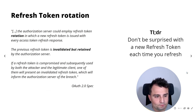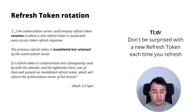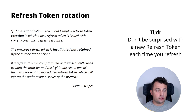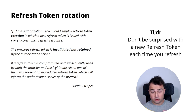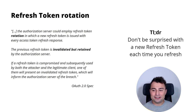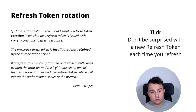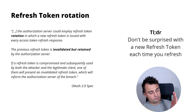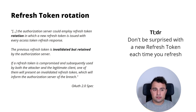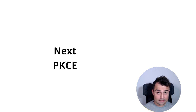Refresh token rotation. The OAuth spec recommends that authorization servers employ refresh token rotation, issuing a new refresh token with every access token refresh response. The previous token is invalidated but retained by the server to detect if a refresh token is stolen. Don't be surprised when you receive a new refresh token every time you refresh — the server may be implementing this mechanism to detect situations where a token is used by both the victim and the attacker simultaneously. Next up is PKCE.